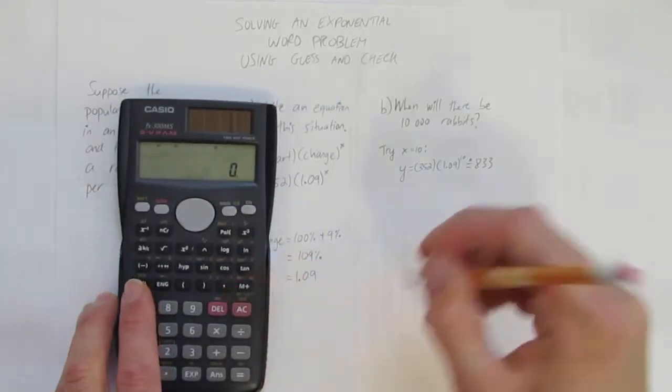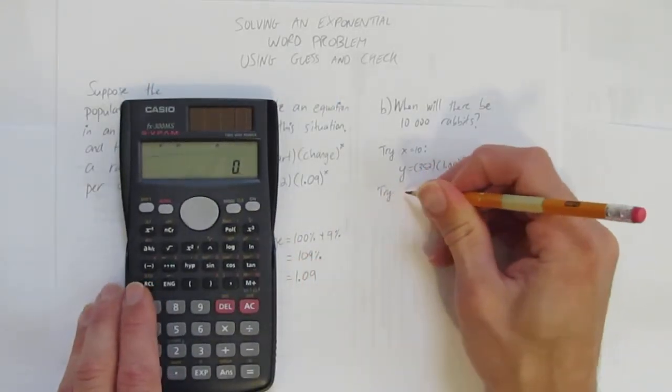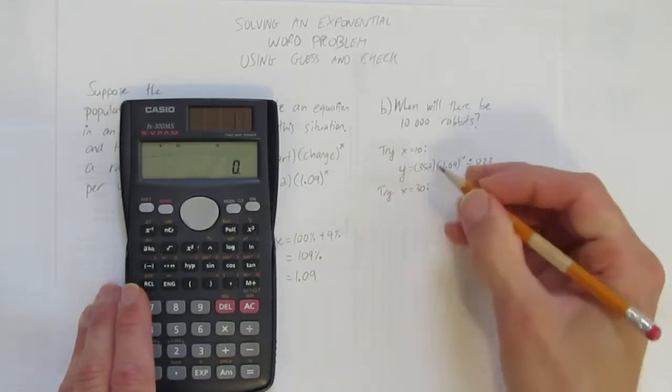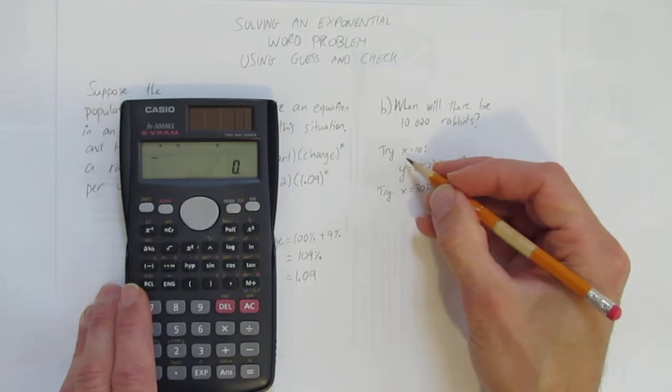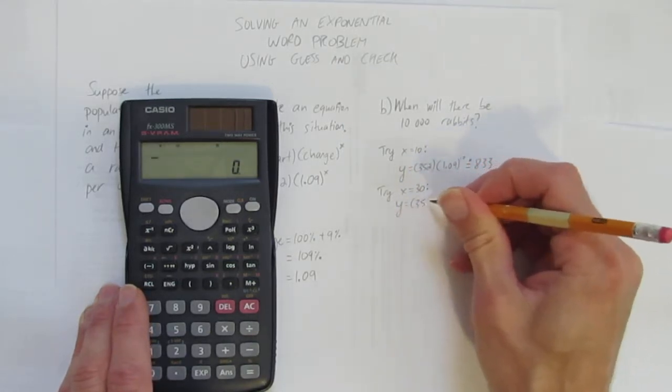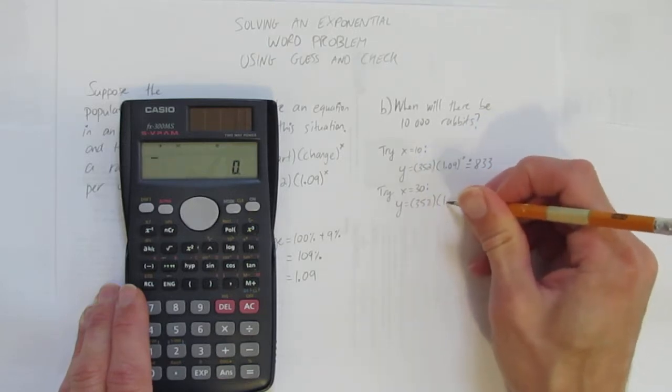So I'm going to need to try a bigger number. Let's see what happens when I try X equals, I'm going to go much bigger, X equals 30. Notice the communication here of X equals and a colon. And then here's what I'm doing. I'm subbing in 30 into this equation. I write out my work.